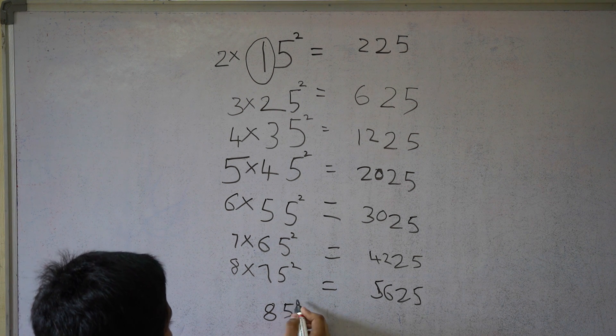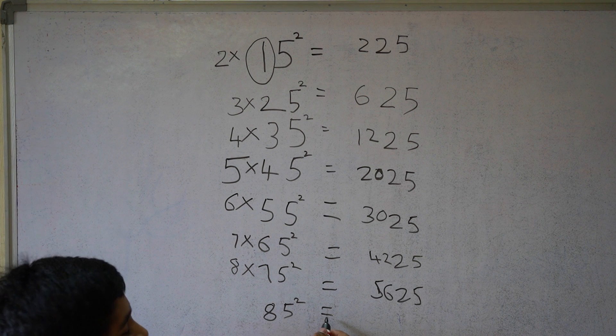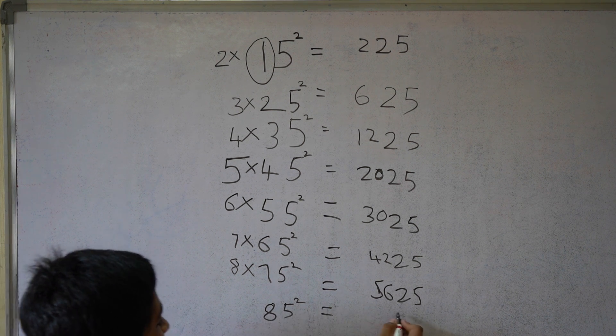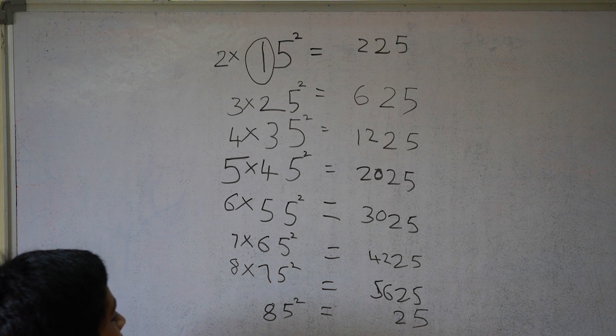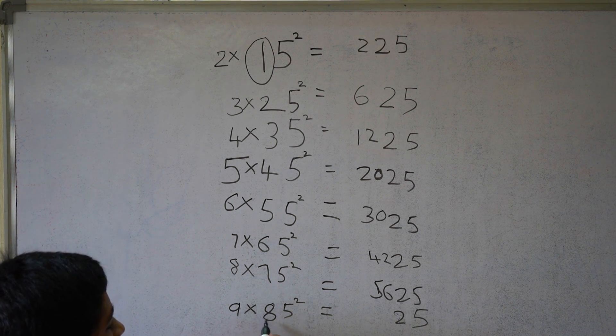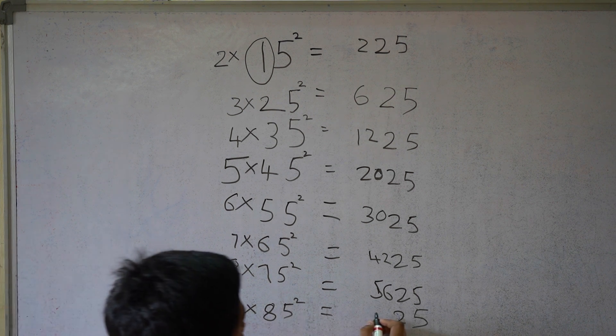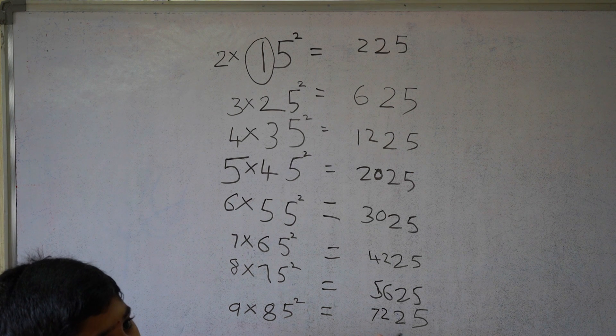85 square. 5 square equals 25. 8 times the next natural number 9 equals 72. So 7225.